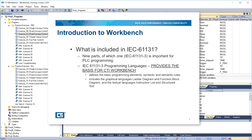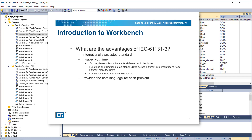IEC 61131-3 defines the basic programming elements, syntactic and semantic rules, and includes the graphical languages ladder diagram and function block diagram, and the textual languages instruction list and structured text. The advantages of IEC 61131-3 include being an internationally accepted standard, saving time since you only have to learn it once for different controller types, standardizing functions and function blocks across different implementations from different manufacturers, resulting software that is more modular and reusable, and providing the best language for each problem.